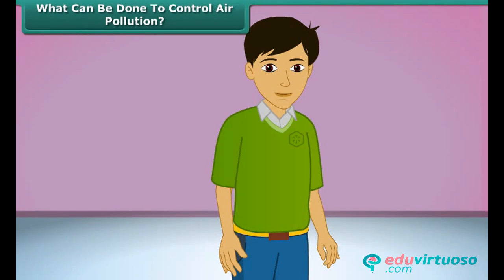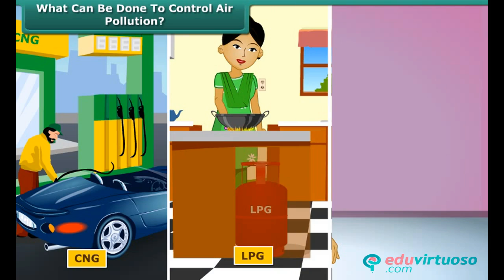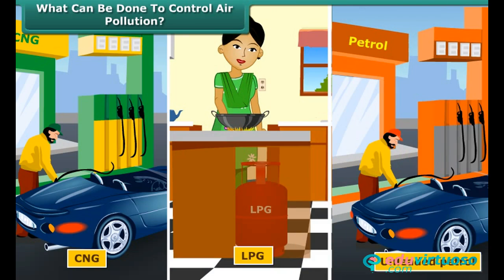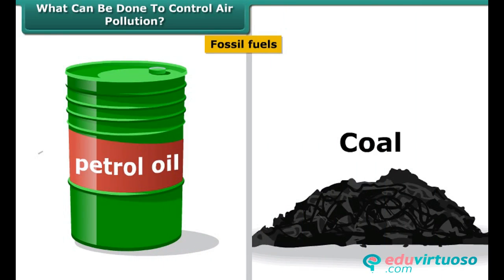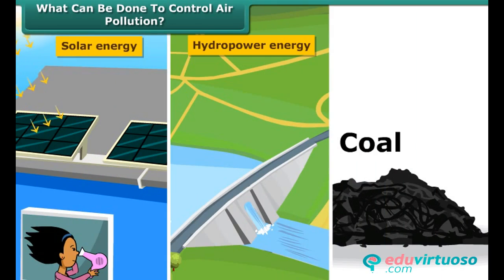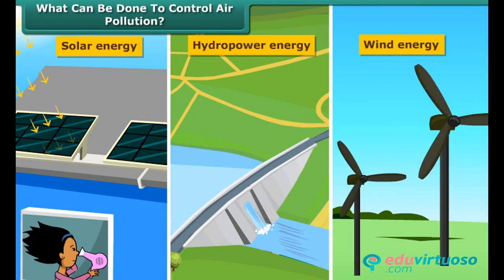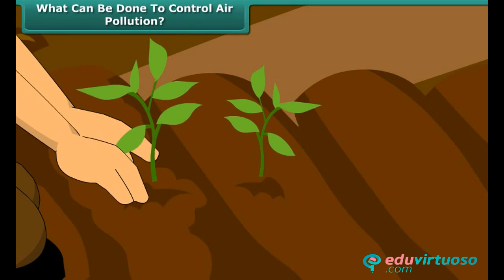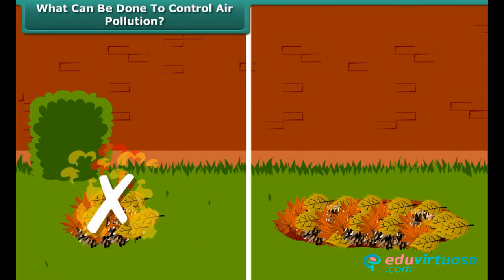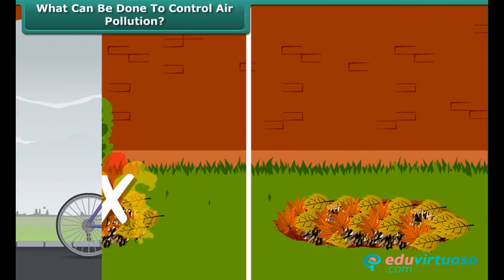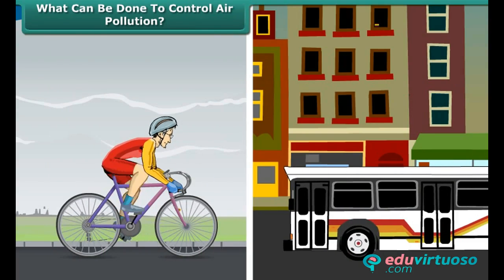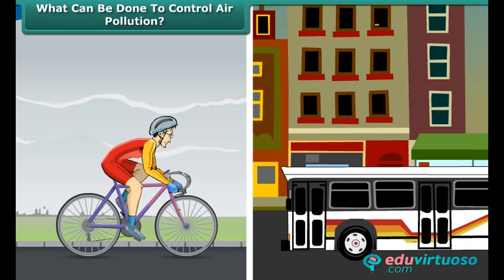What should we do to reduce air pollution? There are many things we can do. We can use clean fuels such as CNG, LPG, and unleaded petrol. Instead of fossil fuels, we can use solar energy, hydropower, and wind energy. We can also plant new trees. Rather than burning dry leaves, we can put them in a compost pit. We can walk more, switch to bicycles for short distances, and use public conveyances.